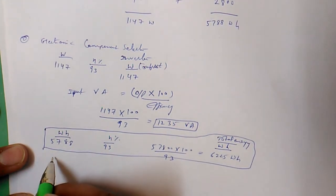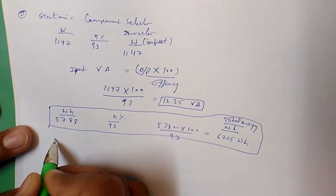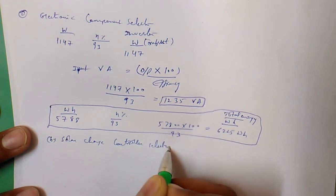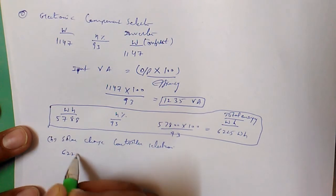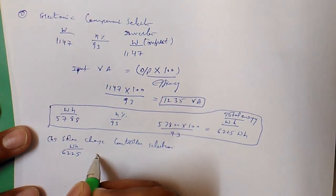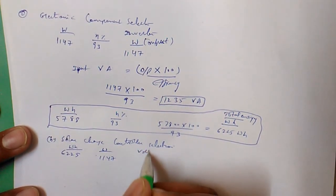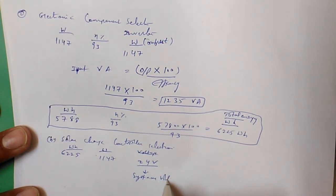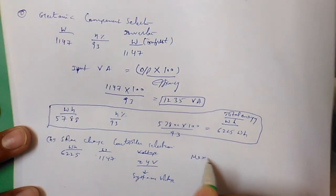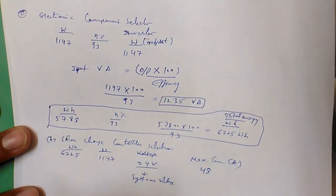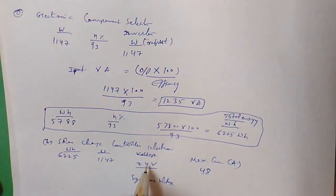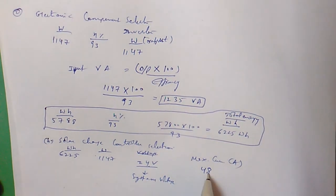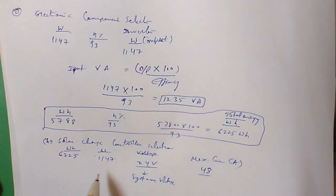Next is solar charge controller selection. Total energy is 6225 watt-hours, load is 1147 watts, and system voltage is 24 volts. Maximum current = 1147 / 24 = 48 amperes. So the charge controller specification is 24V with a maximum current of 48A.